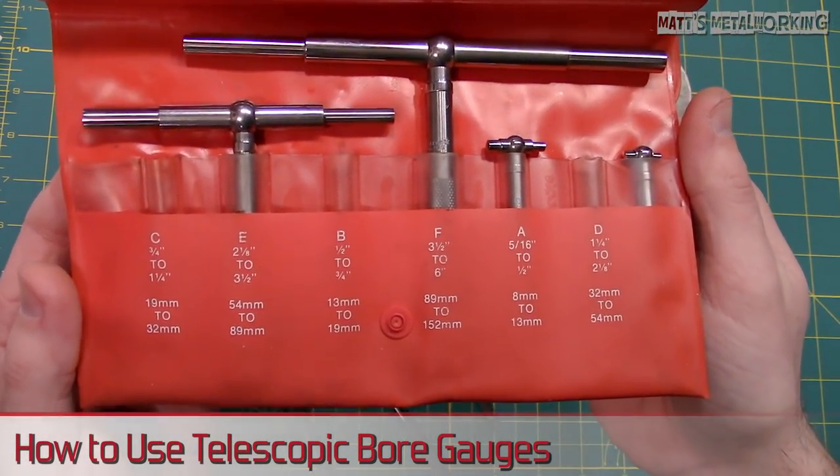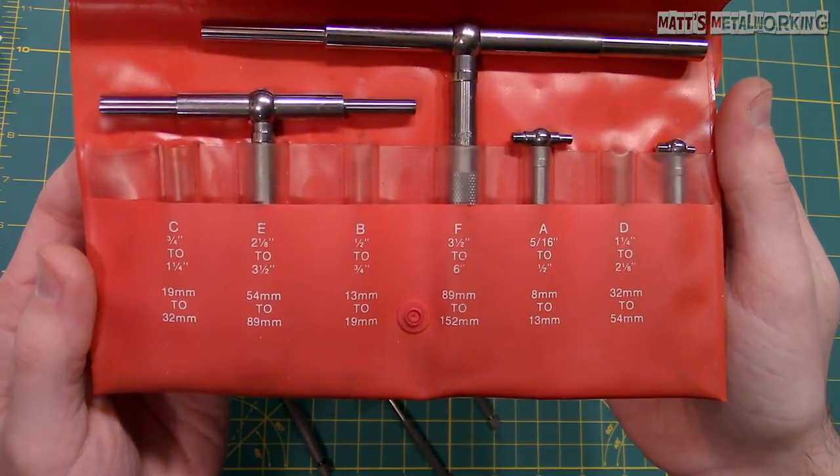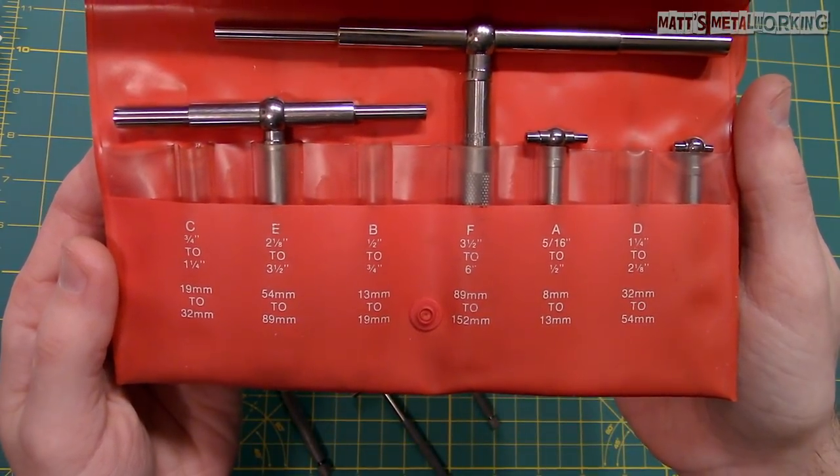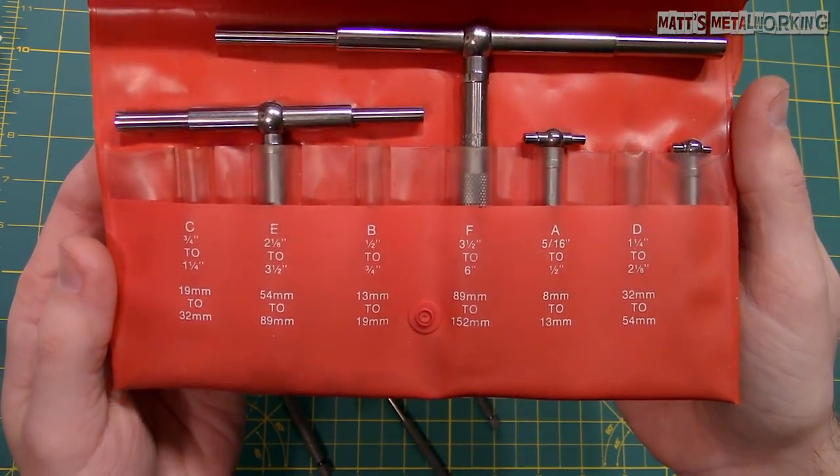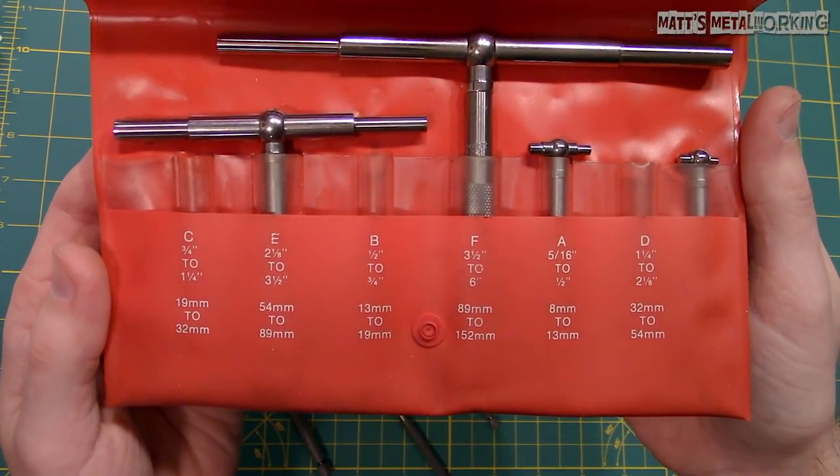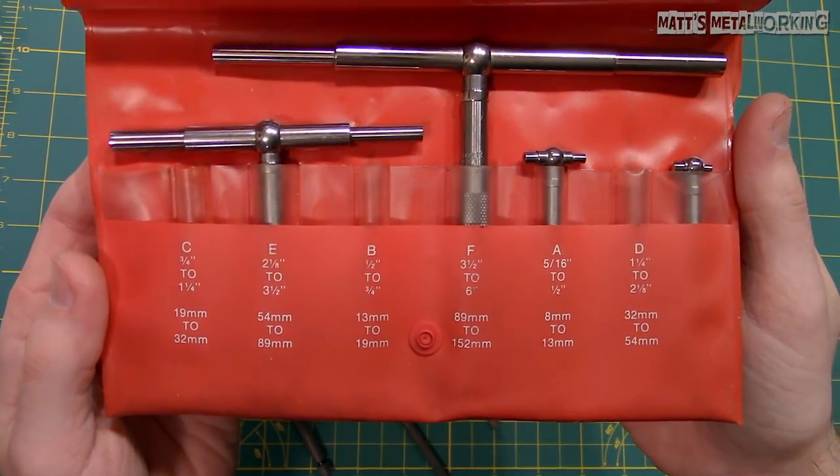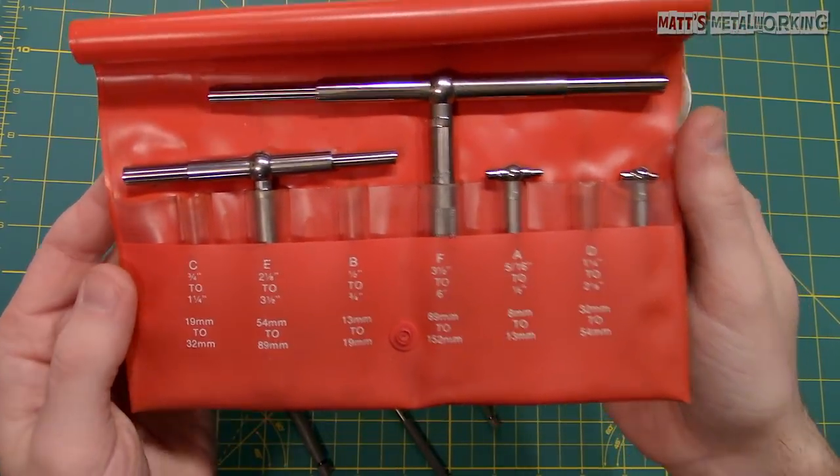Telescopic bore gauges are used to measure the inside diameter of a hole or bore. These do not take the measurements themselves but are used to transfer a measurement to another tool. Typically a micrometer is used to take the measurement from the bore gauge.